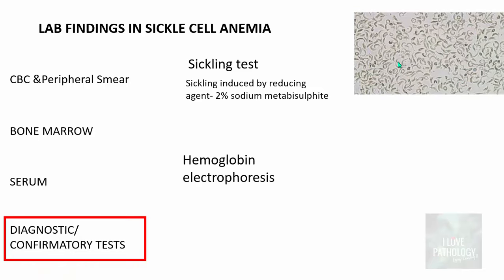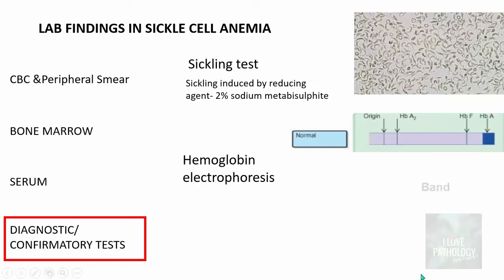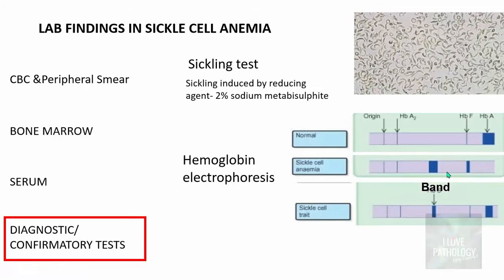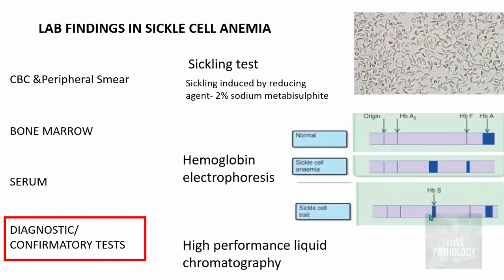Hemoglobin electrophoresis is one of the most confirmatory tests. In normal adults, hemoglobin is predominantly HbA, whereas in sickle cell anemia, HbS is found along with some HbF. In sickle cell trait, both HbS and HbA are present — adult hemoglobin decreases sickling, so clinical manifestations are much less, appearing only with extreme deoxygenation. The third important confirmatory test is high-performance liquid chromatography (HPLC).